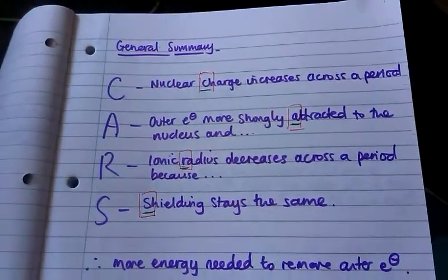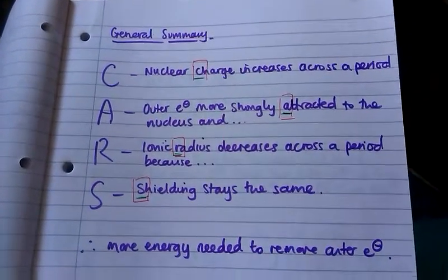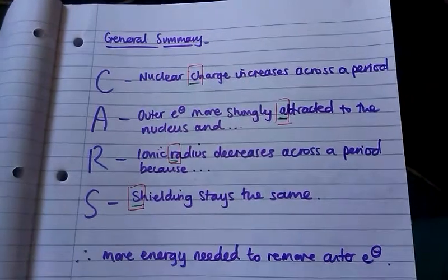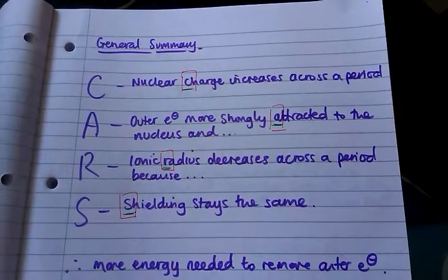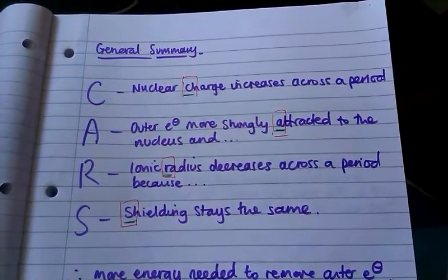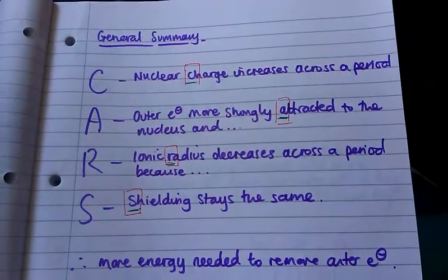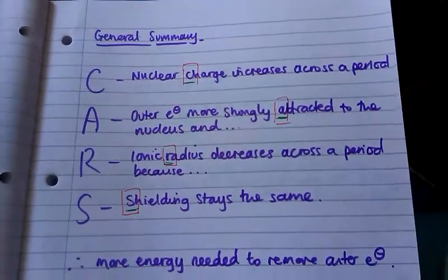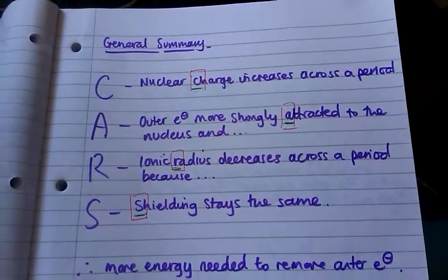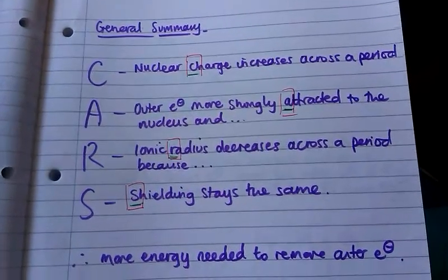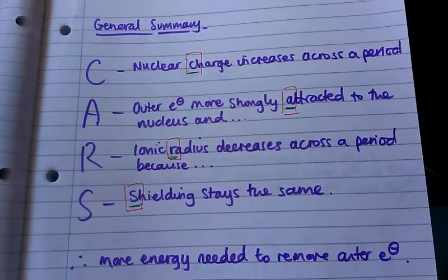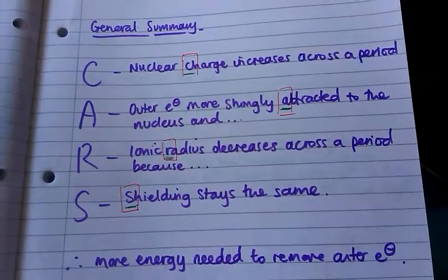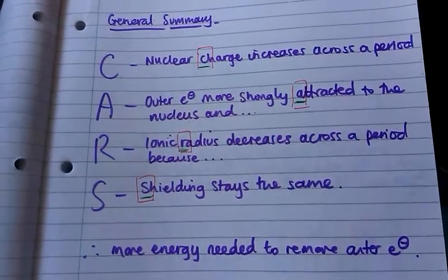The mnemonic CAUSE is a good way to remember the general trend. Nuclear charge increases across a period, which means the outer electrons are more strongly attracted to the nucleus, and the ionic radius decreases as a result because the amount of shielding stays the same — so more energy is needed to remove an outer electron when you go across the period.